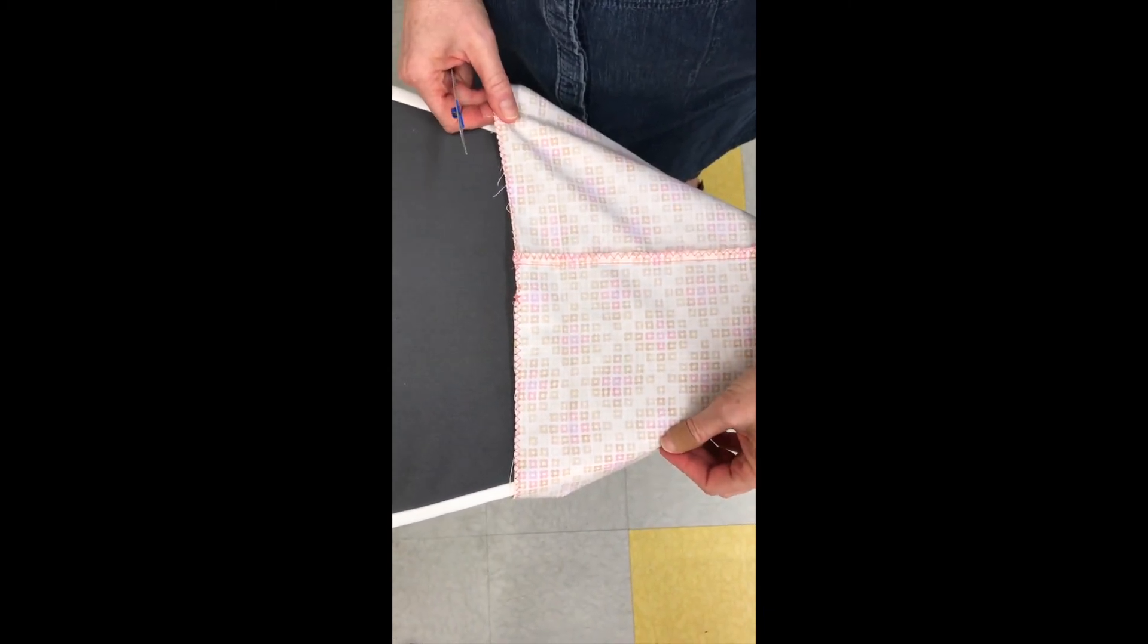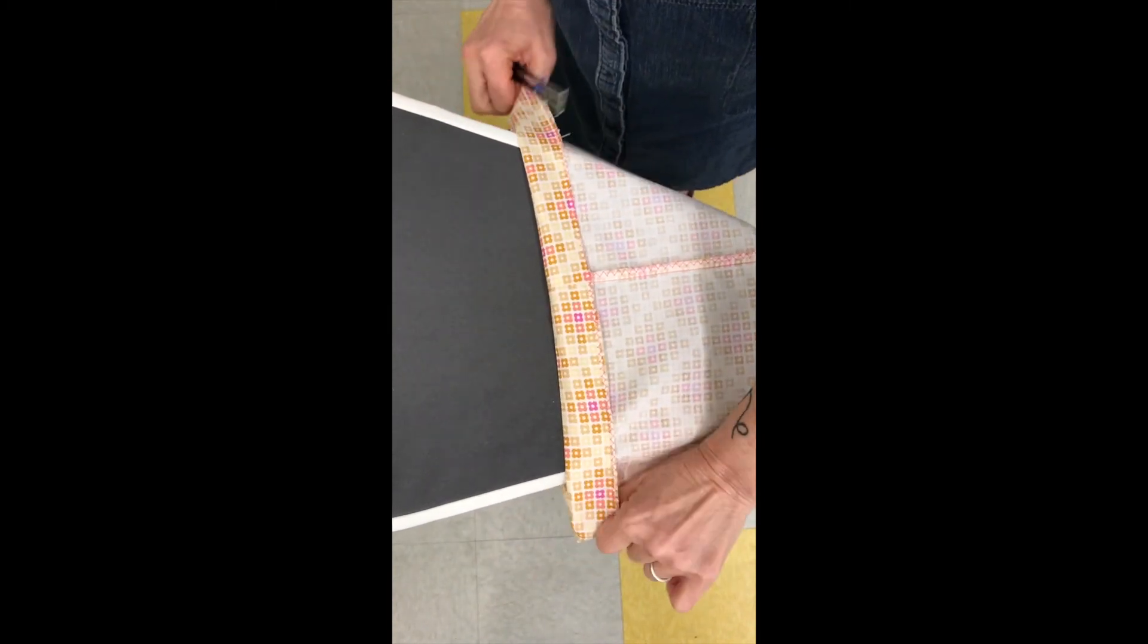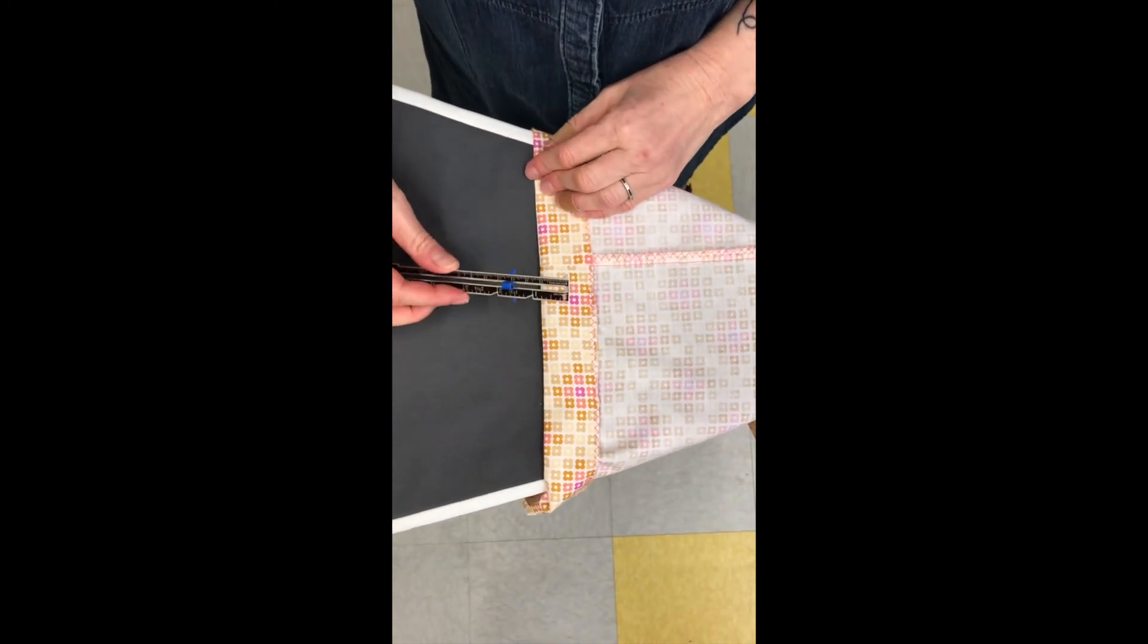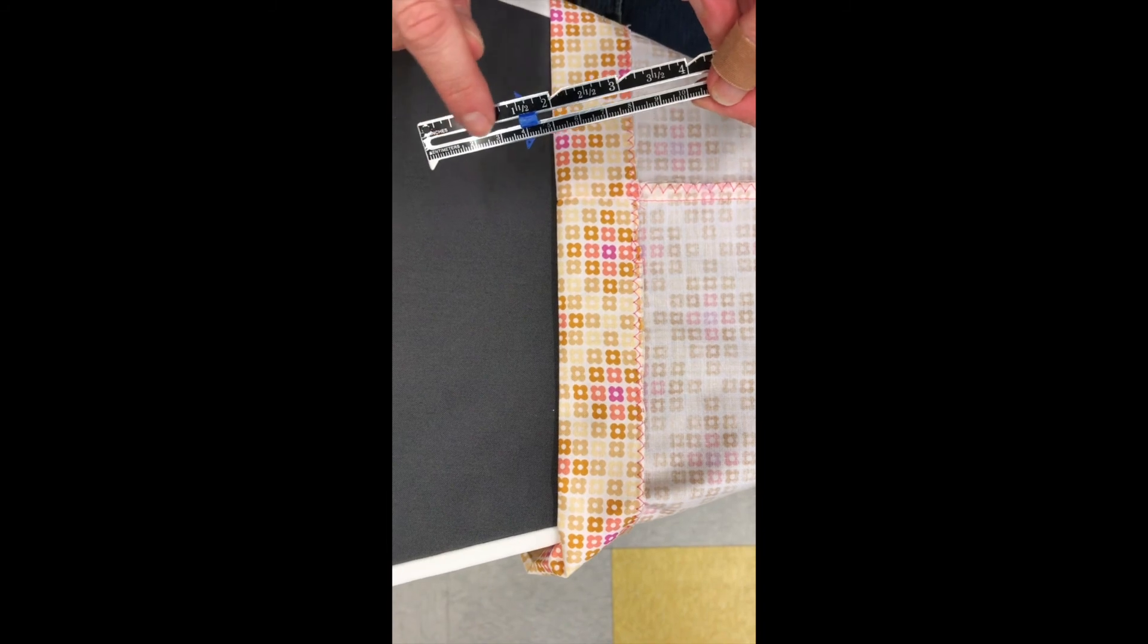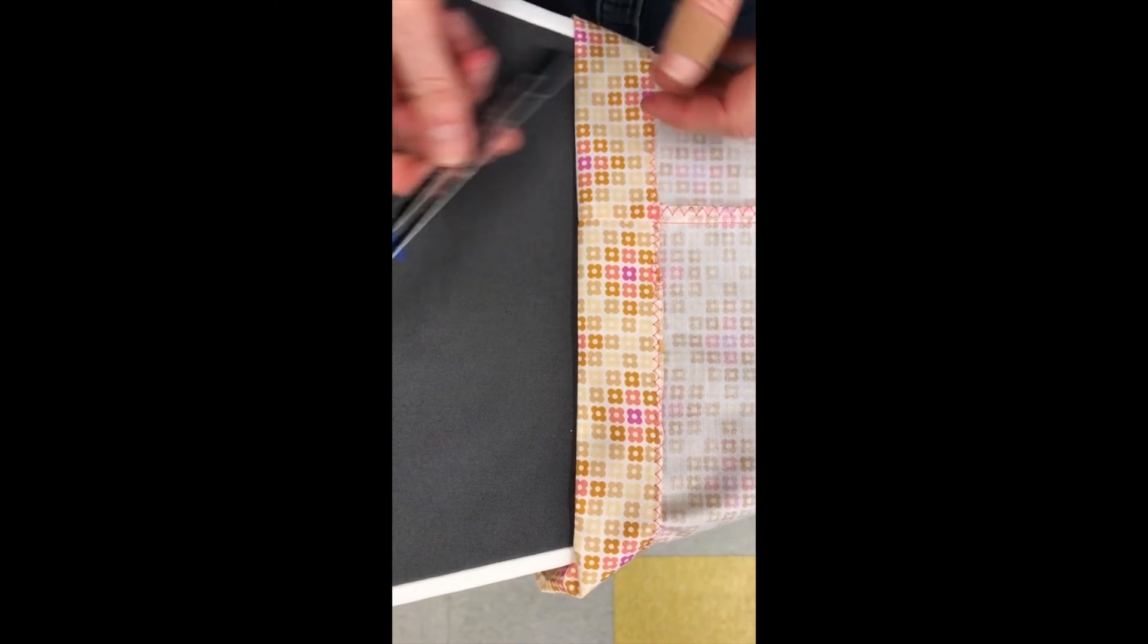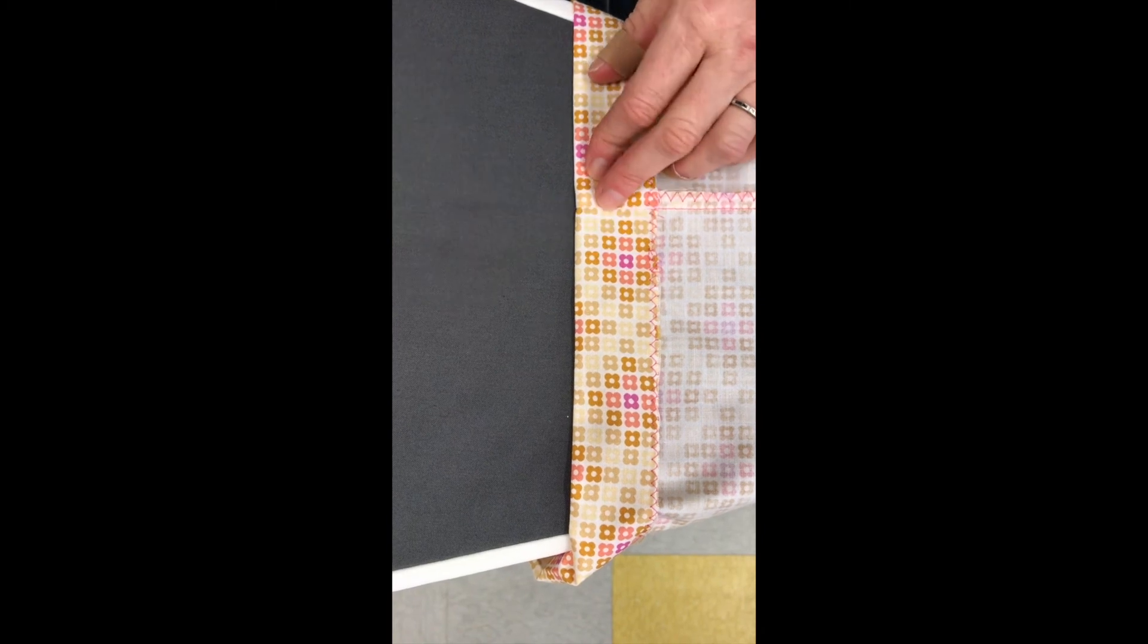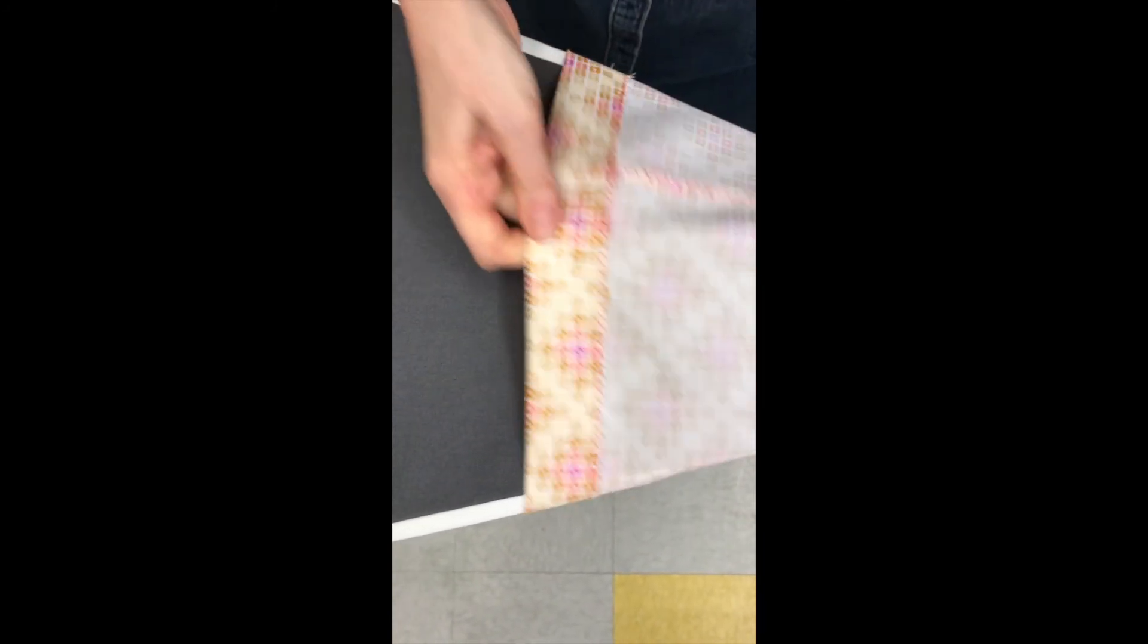This is what I like to call measure press spin. So first you're going to fold the edge over, and we're measuring it. We want this fold to be an inch and a half, so I'm going to use a seam gauge. And I slid the marker on the seam gauge to an inch and a half. So this is the measure. And then this is the press. Press always means iron. I'm going to iron that bit, and then I'm going to spin.